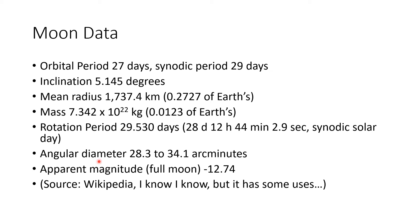The angular diameter. When we talked about circles and degrees and arc minutes and arc seconds, the angular diameter of the moon when we look at it in the sky is 28.3 to 34.1 arc minutes. It will change depending on how close it is to the Earth or how far away it is, but it's about 30 arc minutes. The apparent magnitude when it's full is negative 12.74.